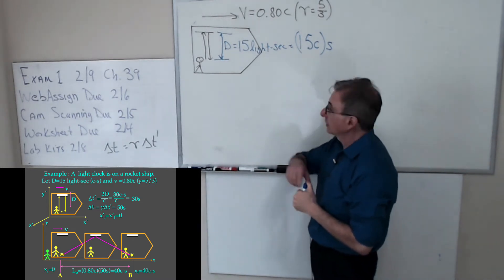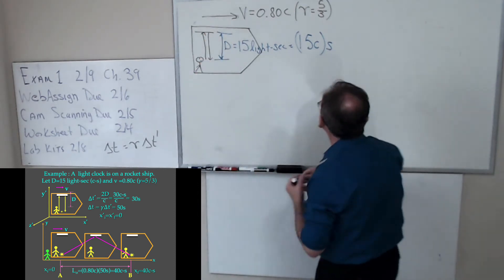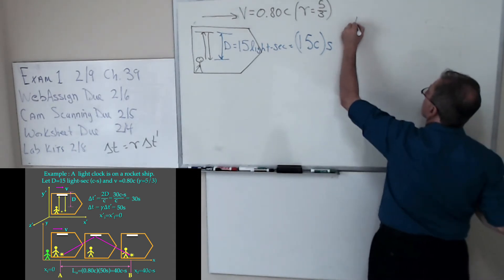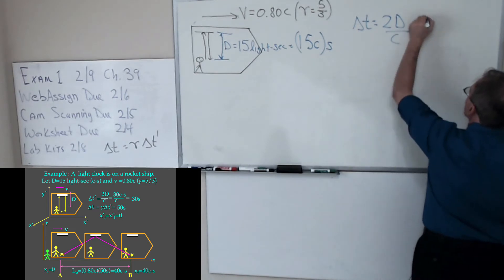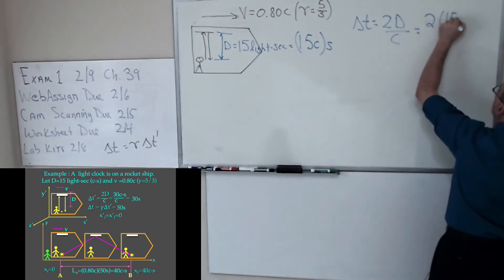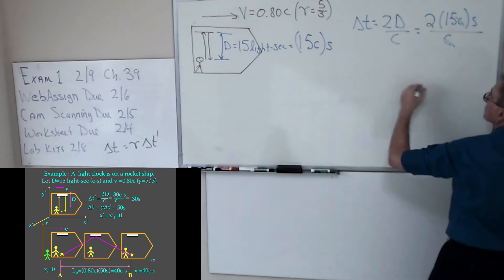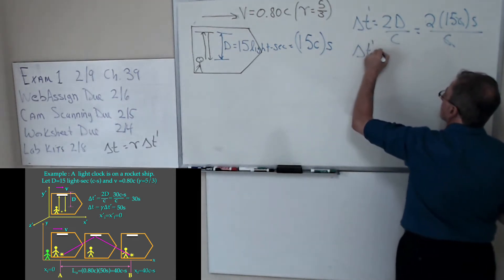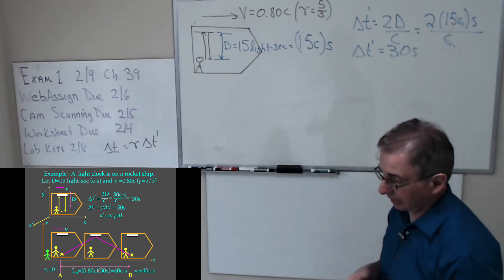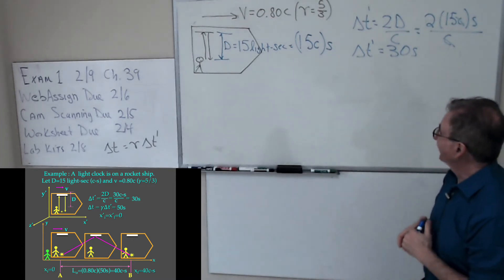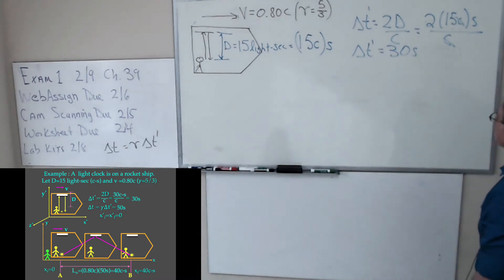2 times 15 is 30, so delta t prime equals 30 seconds. This is a big rocket — I'm just using nominal numbers otherwise everything would have to be in microseconds. So it takes 30 seconds in the rocket's frame for the light to travel to the mirror and back.